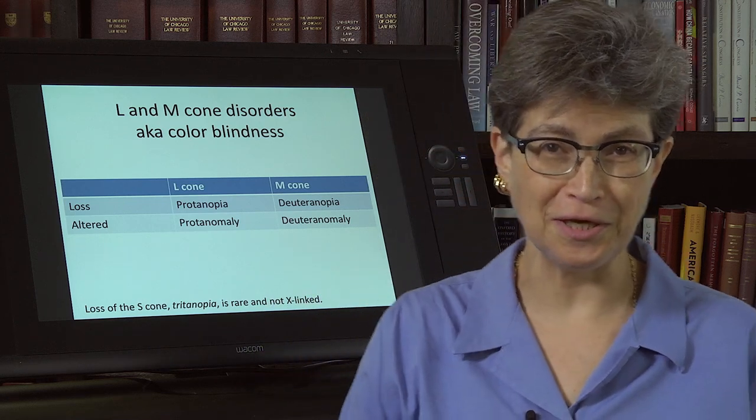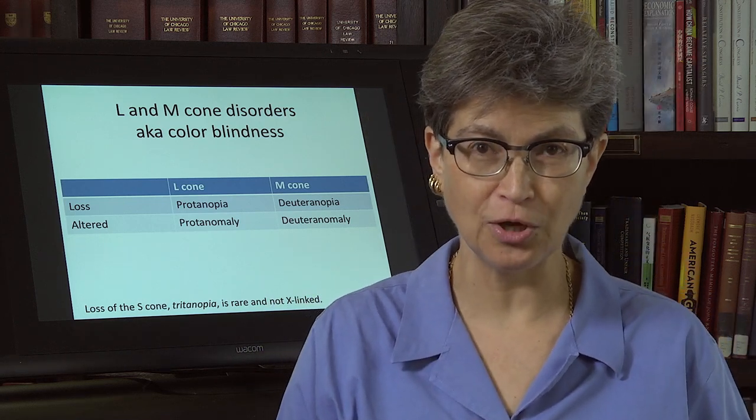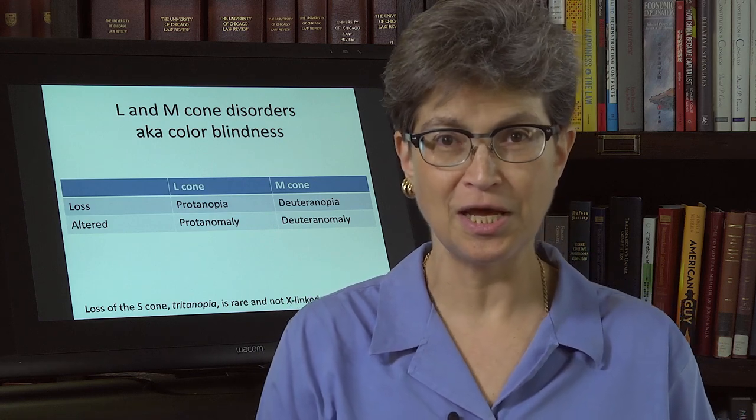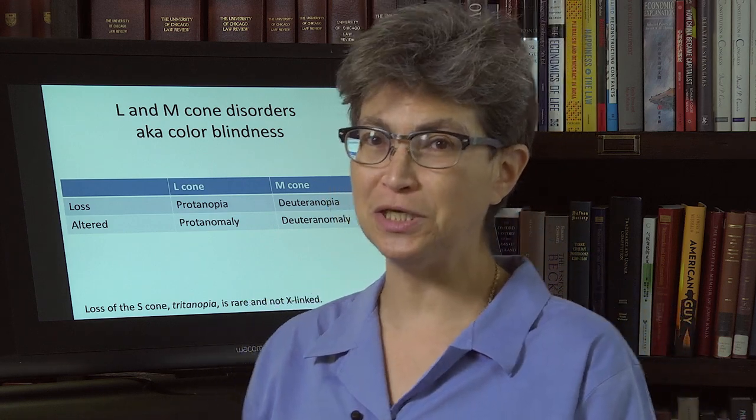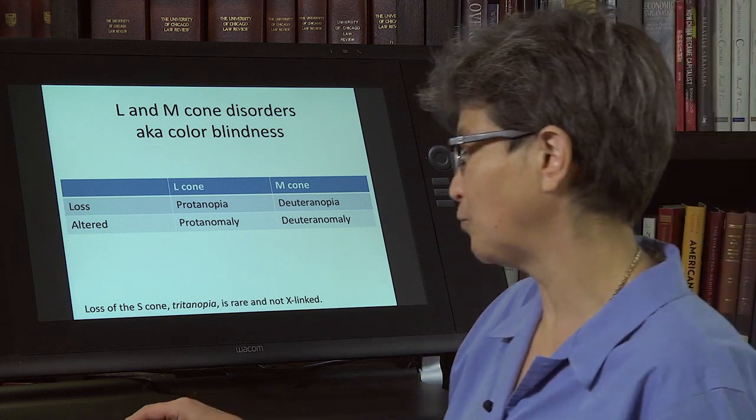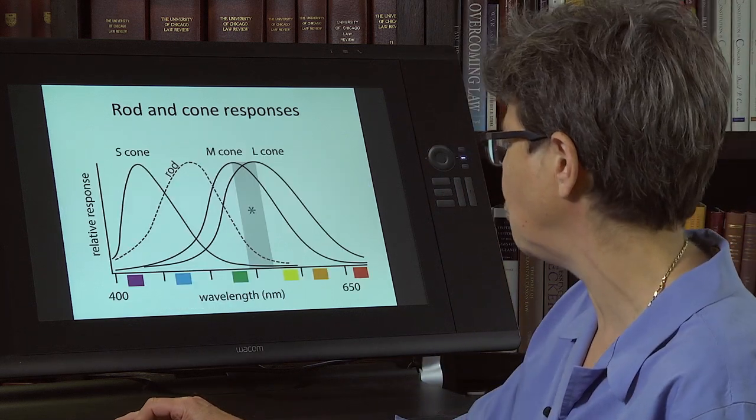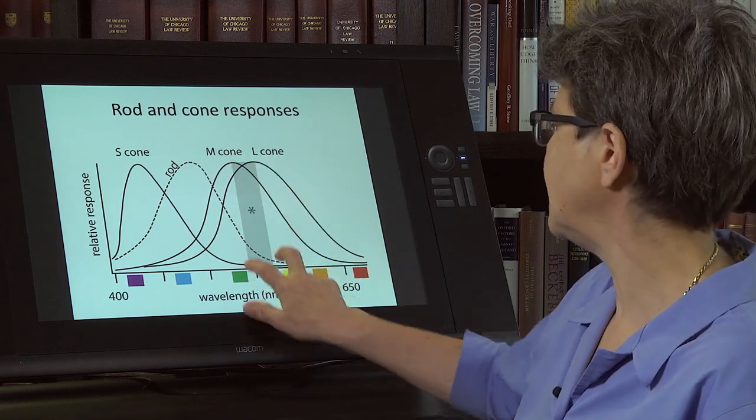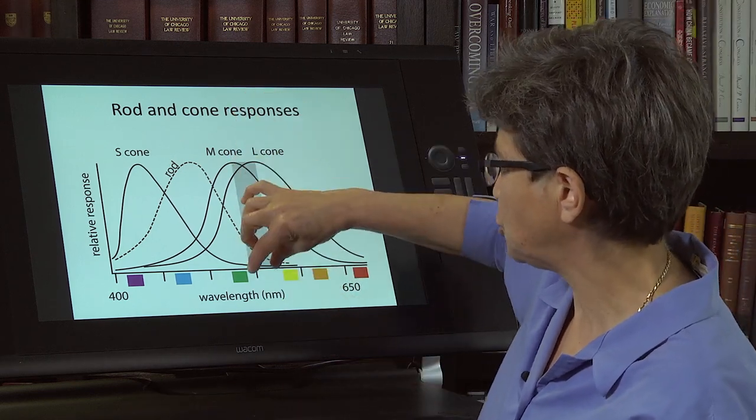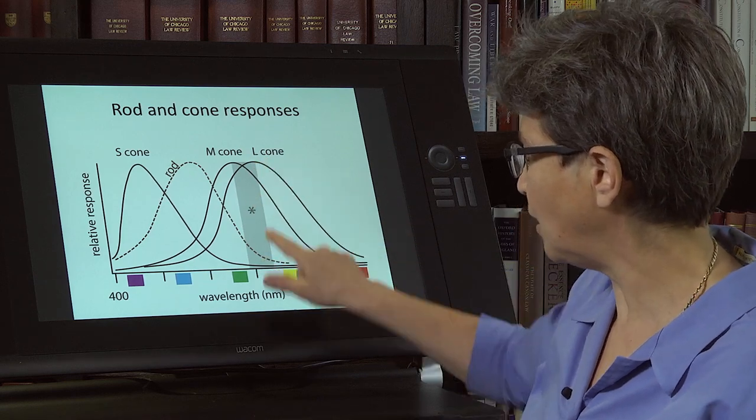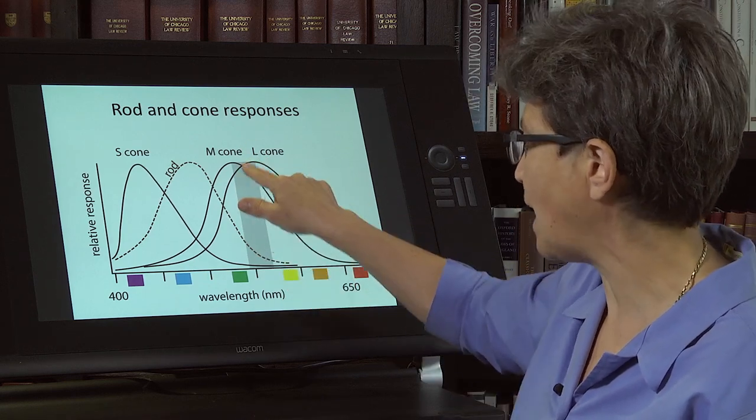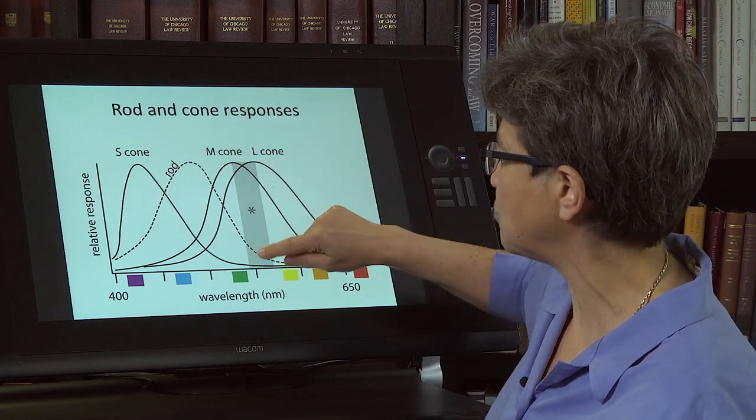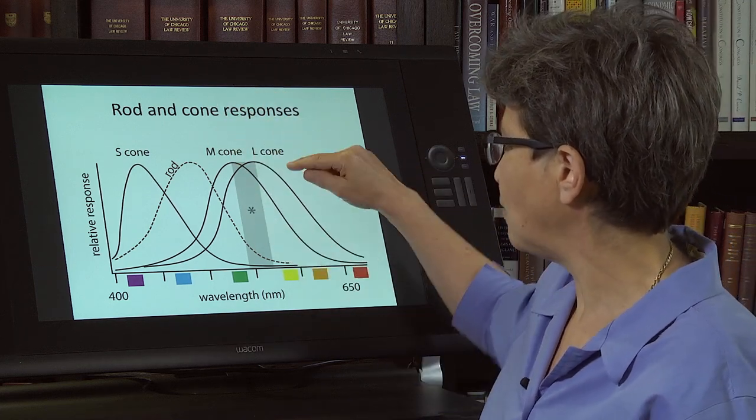So recently, a company called Enchroma put out a series, a type of sunglasses that enables people to see the difference between red and green. And let me just show you what their tactic is. Their tactic is that they took a notch of, they filtered out a notch of wavelengths, this notch that's in this gray zone.